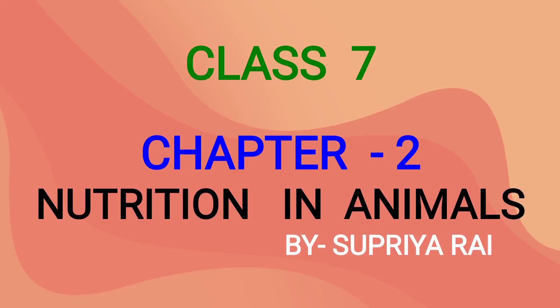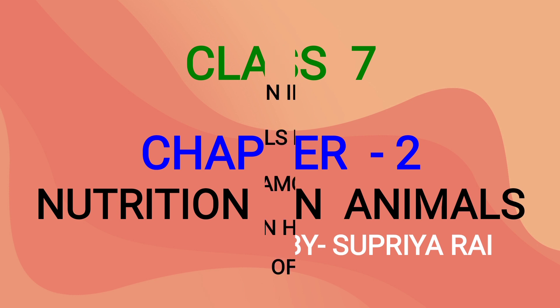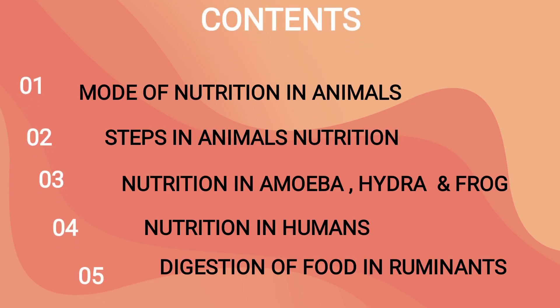Hello everyone, myself Supriya Rai. Today in this video we will study chapter number 2 of class 7th, Nutrition in Animals. Here in this video we will cover the following topics: mode of nutrition in animals, steps in animal nutrition, nutrition in amoeba, hydra and frog, nutrition in humans, and digestion of food in ruminants.